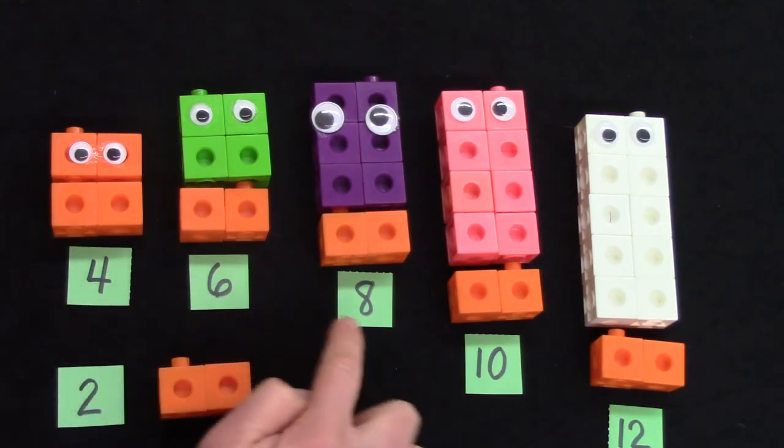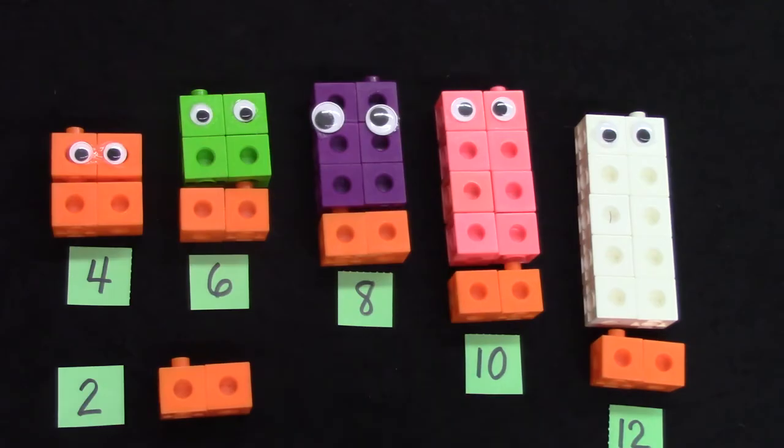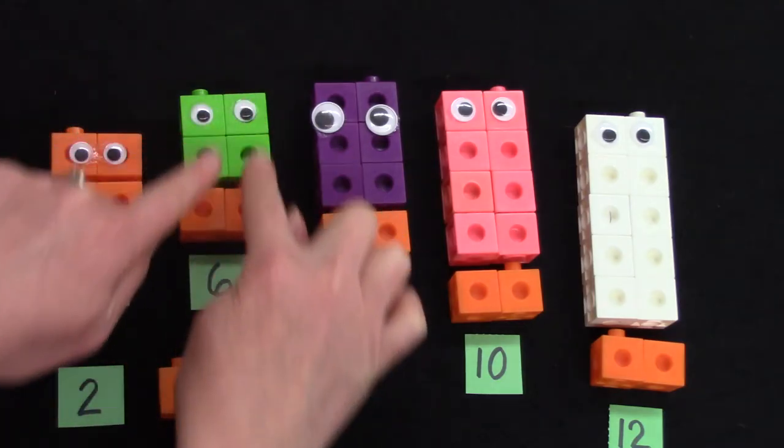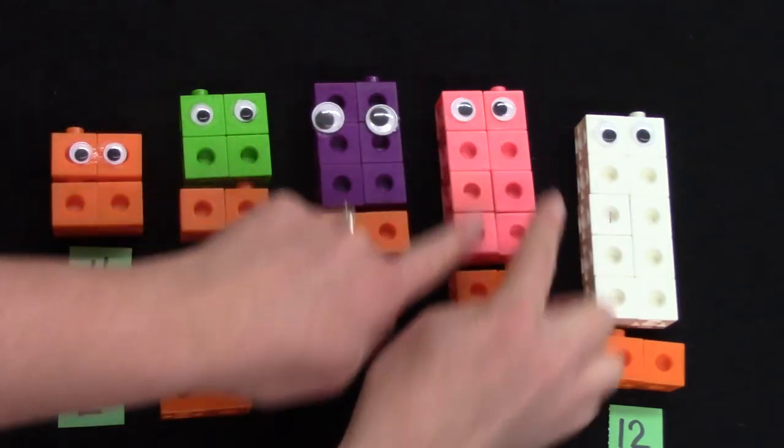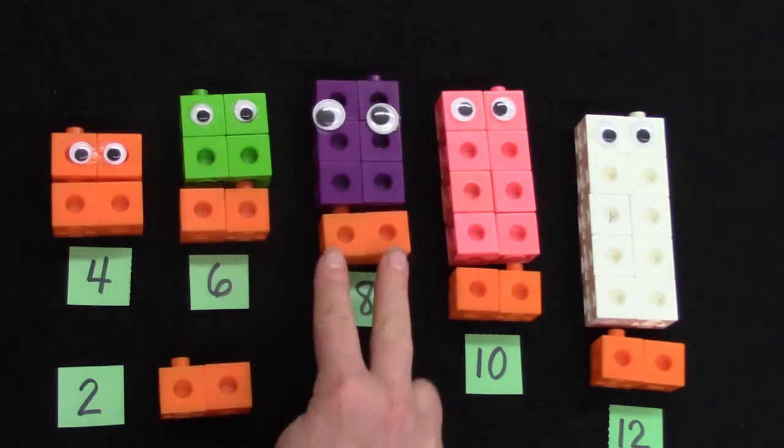2, 4, 6, 8, 10, 12. When we add the number 2 to an even number, our answer is going to be even. We'll still have the same number on both sides. Our number will be even.